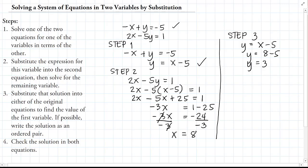If possible, write the solution as an ordered pair. Therefore, the solution is (8, 3) — the X-coordinate comes first, so we have 8 comma 3.